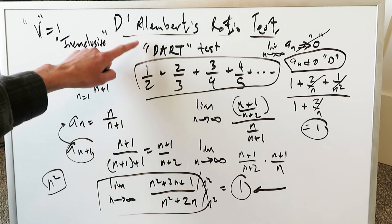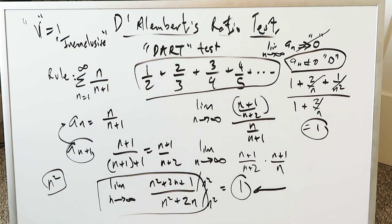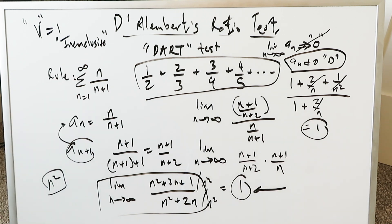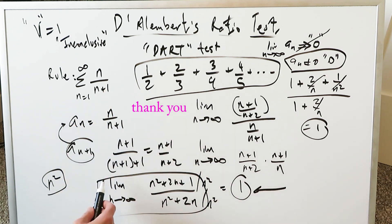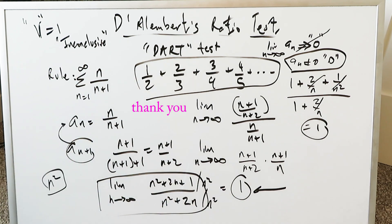Based on the DLM-Burt or DART test, this series is inconclusive. That's all I want to present in this video. Remember: the DART test is applicable for series with positive terms. There are three scenarios based on the value of the ratio: ratio less than 1 — convergent; ratio greater than 1 — divergent; ratio equal to 1 — inconclusive. Have a good day. Thank you.